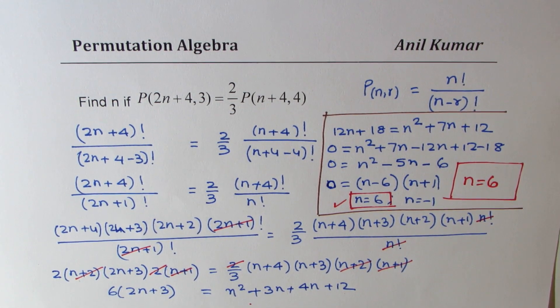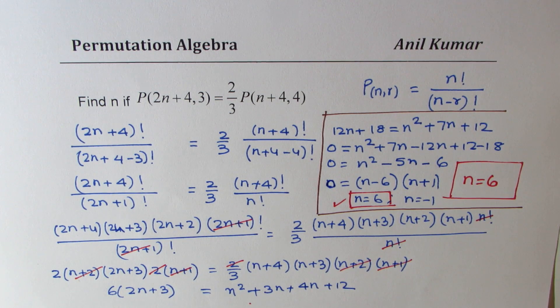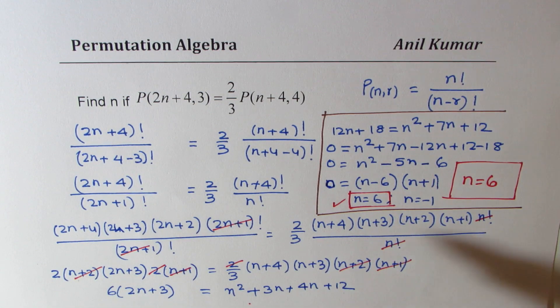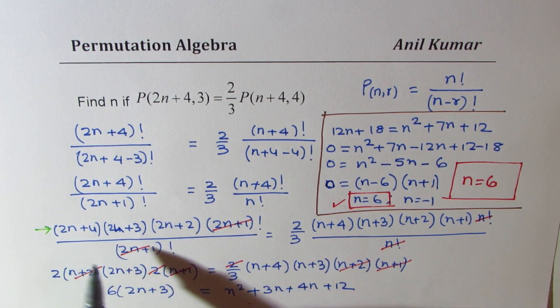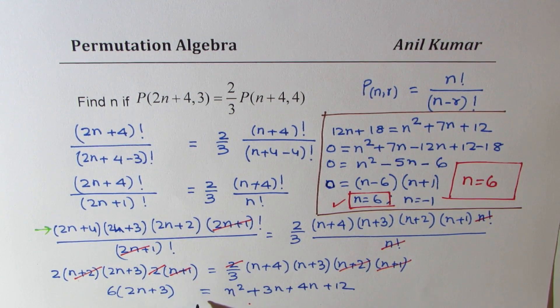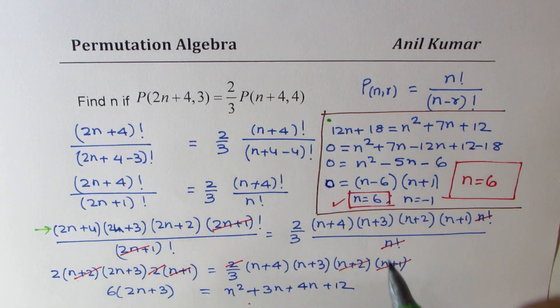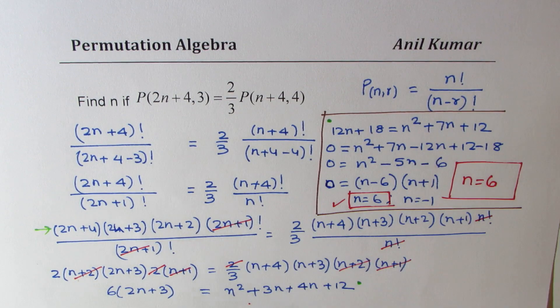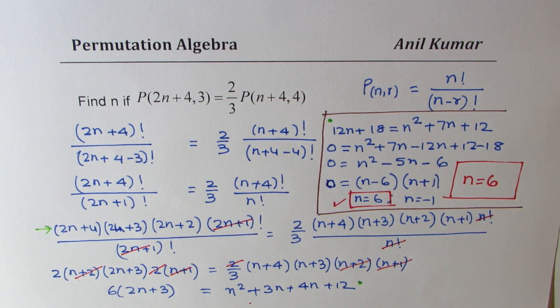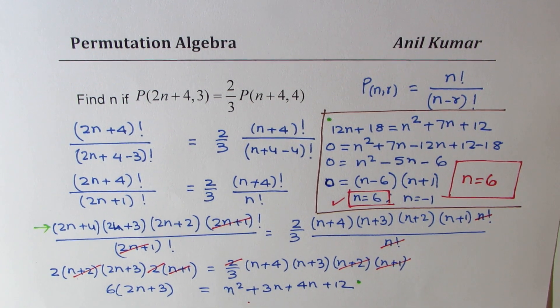I hope you understand what we did here. Once we simplified it, the key step is right there. You could take 2 common and then you could cancel a few more terms, getting a quadratic equation, and from this place, we went to that place to solve it. So that is how you could actually solve such equation. I hope the steps are very clear.